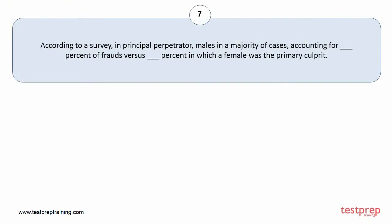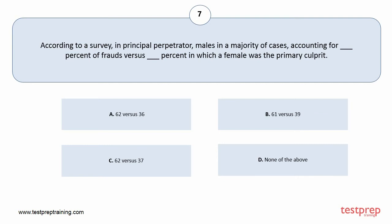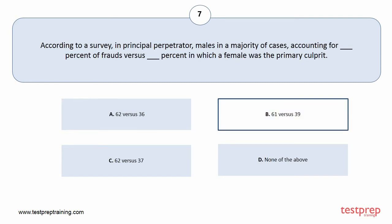Question number 7. According to a survey, the principal perpetrator was male in a majority of cases, accounting for [blank] percent of frauds versus [blank] percent in which a female was the primary culprit. Your options are A. 62 versus 36, B. 61 versus 39, C. 62 versus 37, D. None of the above. The correct answer is option B.